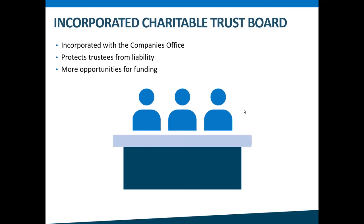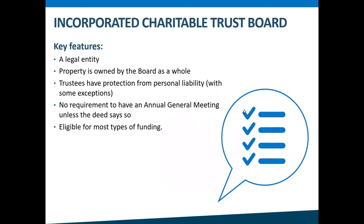An incorporated charitable trust board — or incorporated charitable trust for short — forms its own legal identity when it registers with the Companies Office. Registering with the Companies Office means there's less personal risk to the individual trustees and more opportunities for funding. The key features are: it is its own legal entity that can enter into contracts and hold property in its own name rather than the trustees owning it. Even if the trustees change, the incorporated charitable trust will continue. Trustees have protection from personal liability, although there are some exceptions. It can also employ people, borrow money, and own and lease buildings. There's no requirement to have an annual general meeting unless the trust deed says so. Incorporated charitable trusts are a common type of structure and are eligible for most types of funding in Aotearoa.